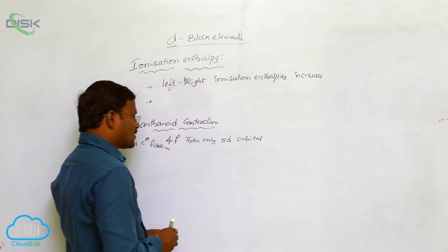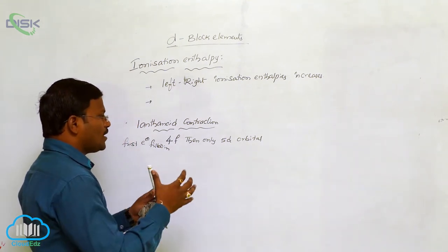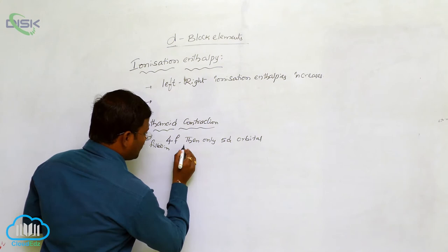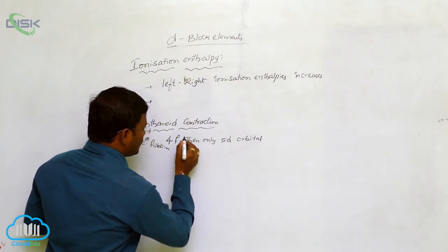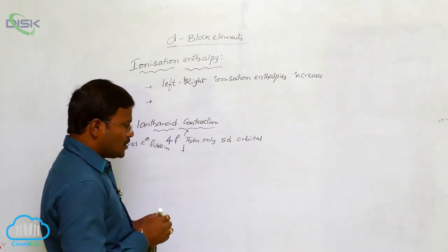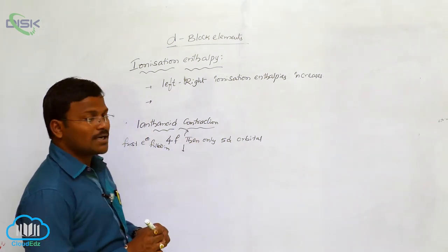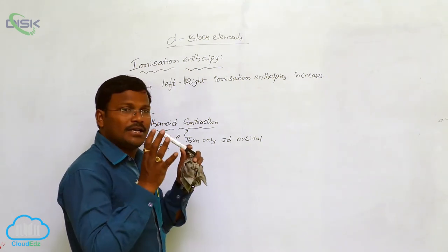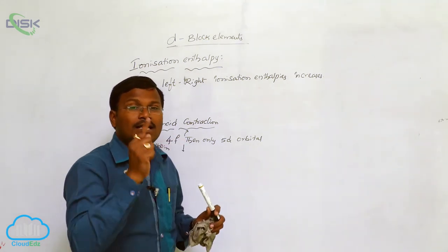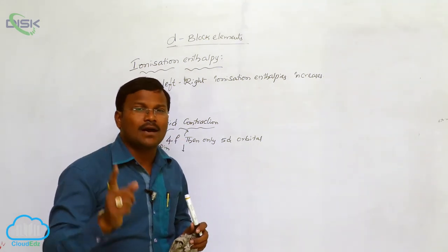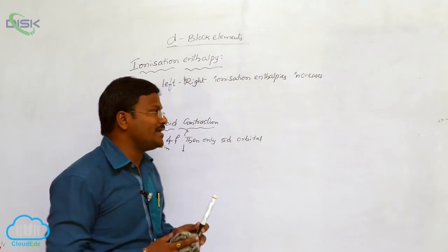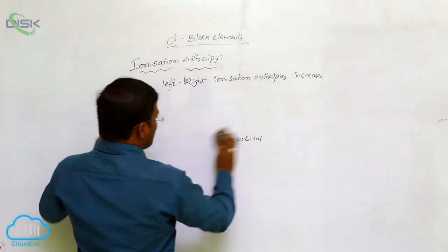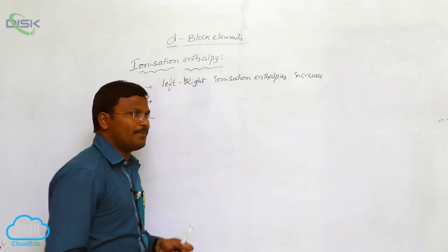When electrons first occupy the 4f orbital followed by the 5d orbital, this concept is called lanthanide contraction. This lanthanide contraction influences atomic radii and ionic radii in D-block elements. Now returning to ionization enthalpy.